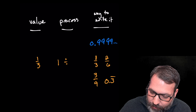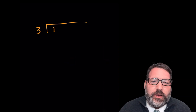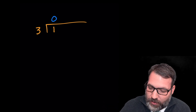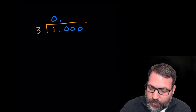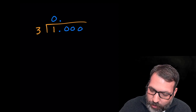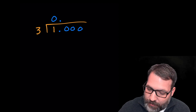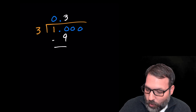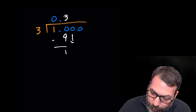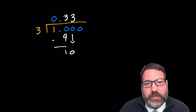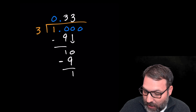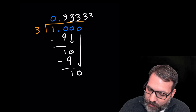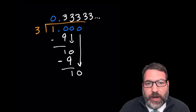We usually generate that idea from something like long division. We take three and ask how many times does it divide into one. The answer is zero, but we don't stop there — we add some decimals, add zeros, and keep asking the same question. Three goes into ten three times. Three times three makes nine; we subtract and it leaves us with one left over. We bring down another zero, three goes into ten three times again, three times three is nine, and we subtract. Pretty quickly we realize this process is going to keep going for as long as we're interested in writing down threes.